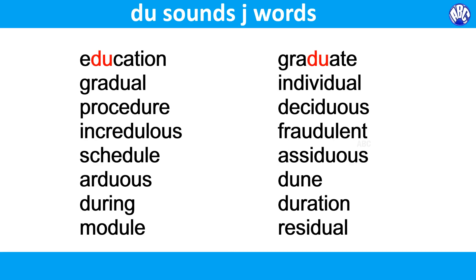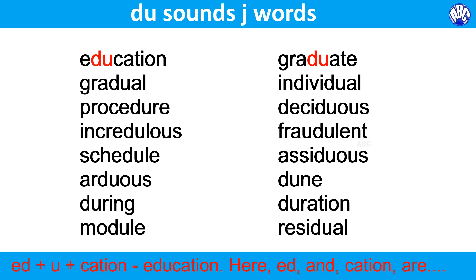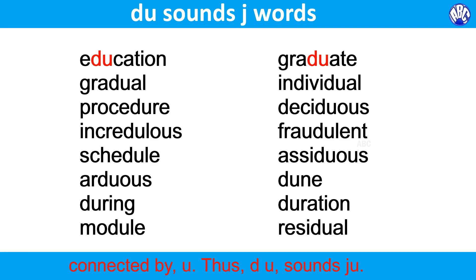The letter D makes the J sound when the U connects the root or base word ending with the D to the suffix. For example, 'ed' plus 'u' plus 'kation' gives us 'education.' Here, 'ed' and 'kation' are connected by U, so D-U sounds like 'ju.'